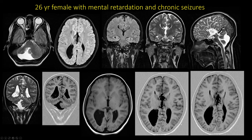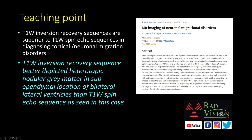The teaching point is that T1 inversion recovery sequence should be used whenever cortical migration anomalies are suspected, as it increases contrast between grey matter and white matter, helping diagnose cortical migration anomalies better than T1 spin echo sequence. The nodular heterotopic grey matter in the periventricular location of bilateral ventricles is clearly better depicted on T1 inversion recovery. A published journal on MR imaging of neural migration disorders confirms that T1 inversion recovery images are superior to T1 spin echo sequence.